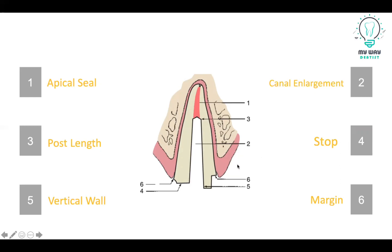In point four, we need to have the horizontal stop to prevent wedging. Then in point five, we need a vertical wall to prevent rotation. And finally, we need to extend our preparation margin to a sound tooth structure for the crown.